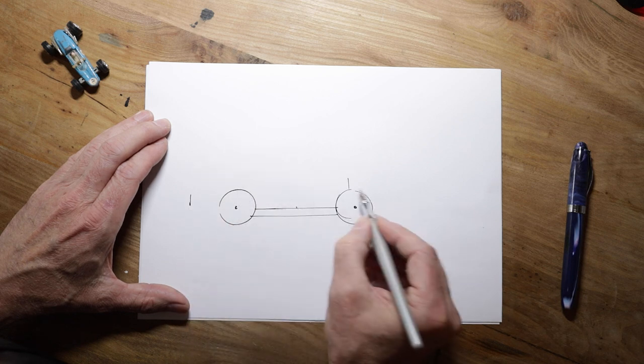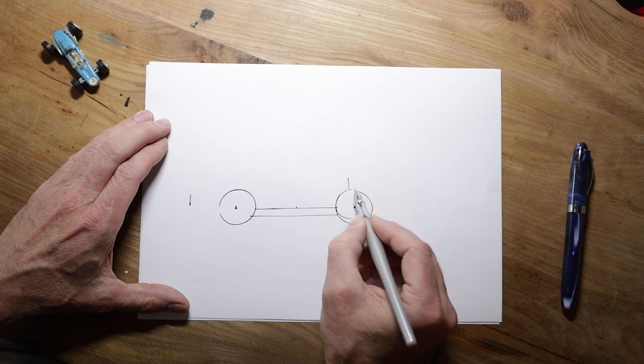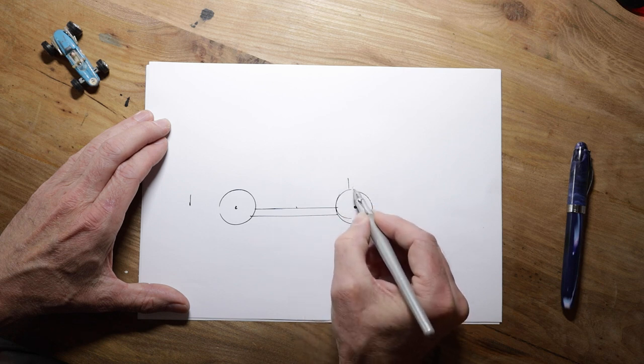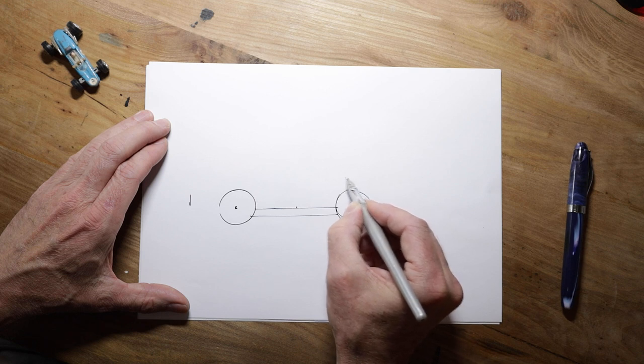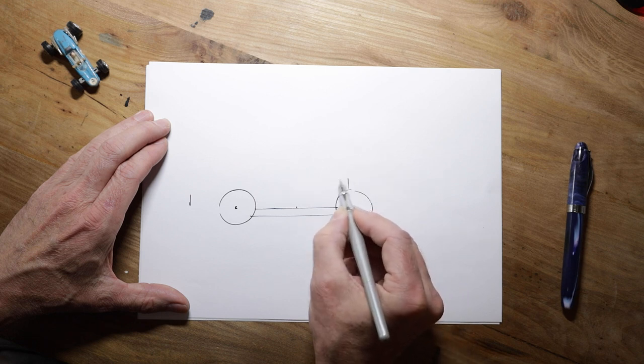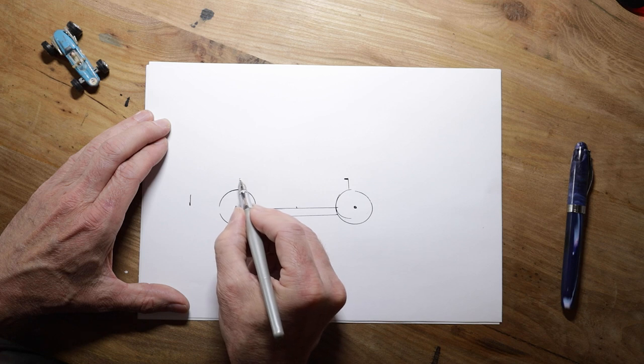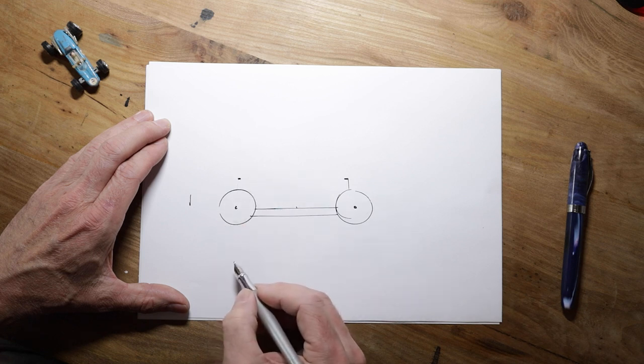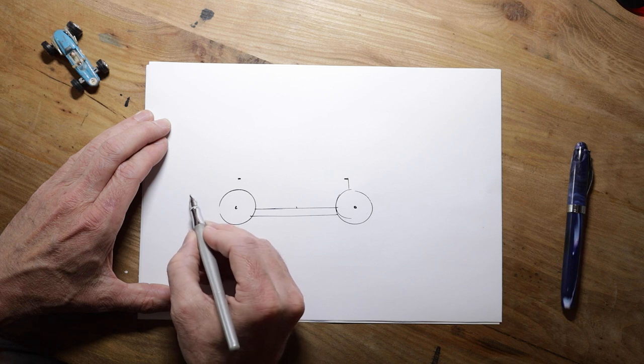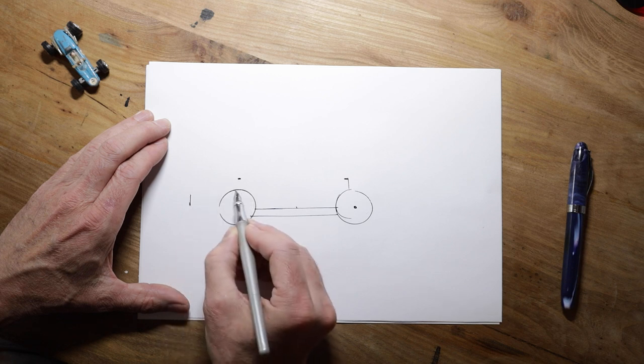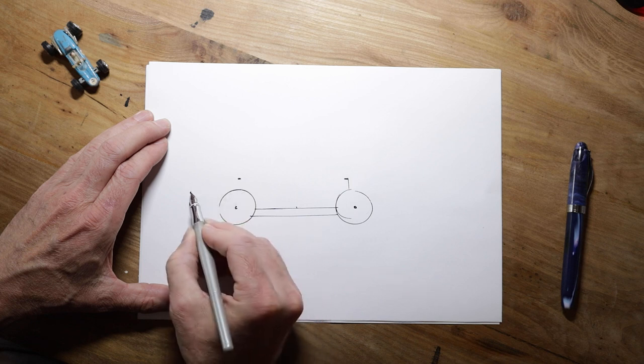Now what we need is a couple of, we need to know the height. The height is a bit less than half a wheel. So this is half a wheel would be here. We need about this much. And the same above the back wheel. And then the top of our tail, this part here, is going to be about level with the top of the wheel.